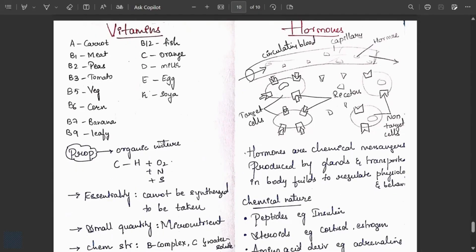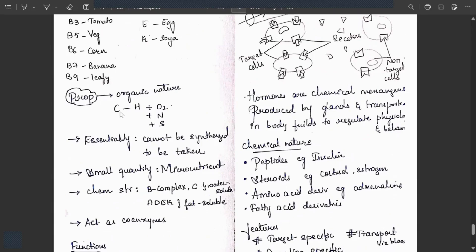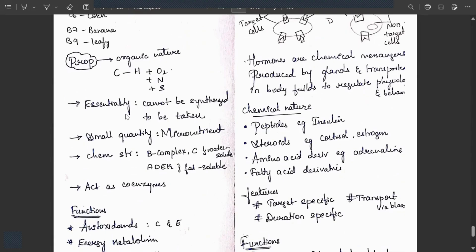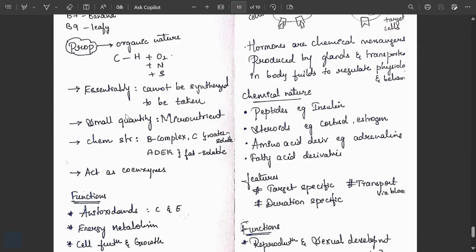Vitamins and minerals differentiated. Vitamins: I have written one example for each vitamin to remember. Properties: organic in nature, carbon with hydrogen along with oxygen, nitrogen or sulfur forms vitamins. Essential, required because it cannot be synthesized inside our body, must be taken. Small quantity, micronutrient. Chemical structure: B complex and C are water-soluble vitamins. A, D, E and K vitamins are fat-soluble. They act as coenzymes.